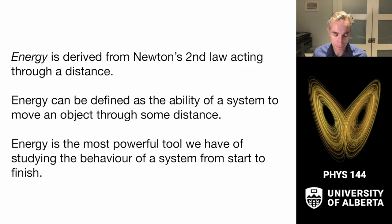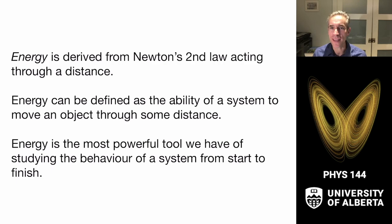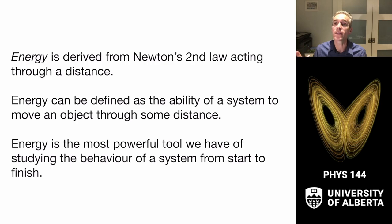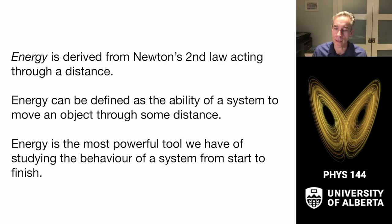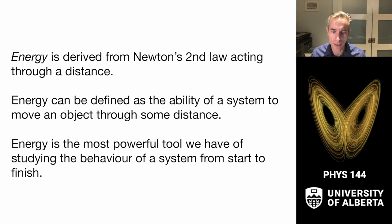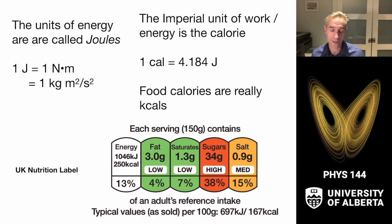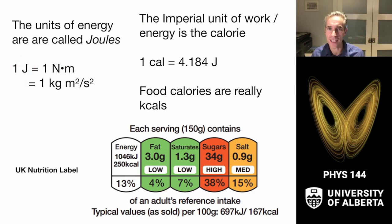The energy of a system is changed by work. Energy is reductively described as the ability of a system to do work — namely to move an object through some distance. This concept of energy, which we'll explore over the next three or four weeks, is going to be one of the most powerful tools we have for studying physics. It derives fundamentally from Newton's second law. The unit of energy is called a joule: one Newton of force moved through one meter of distance. That's one joule, the SI unit of energy — a compound unit of kilogram·meter²/second².